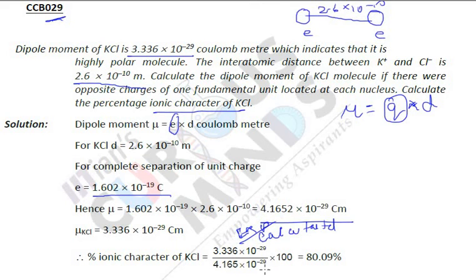Keep this in mind: experimental value divided by calculated value. Here, 3.336 × 10⁻²⁹ divided by our calculated answer using the formula. We get our answer as 80.09 percentage, so ionic character will be this percentage.